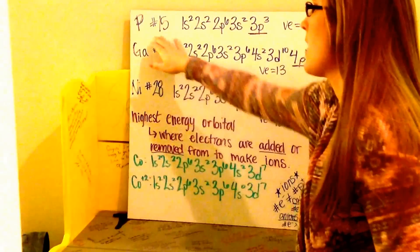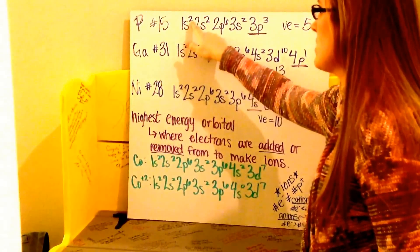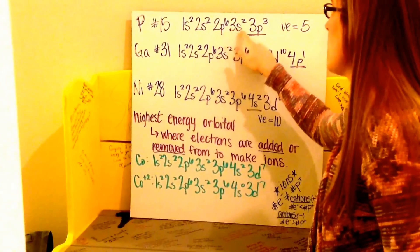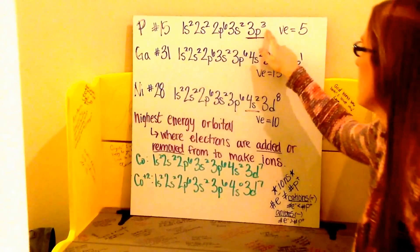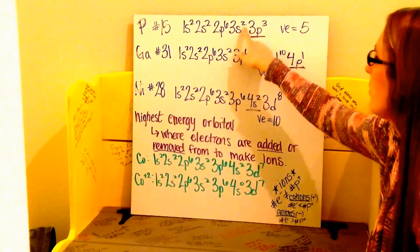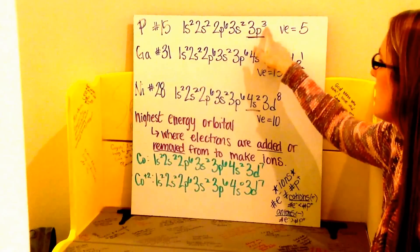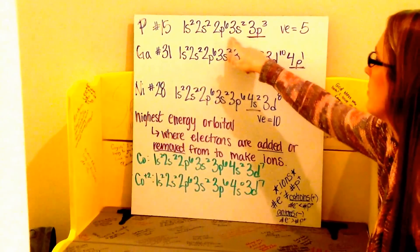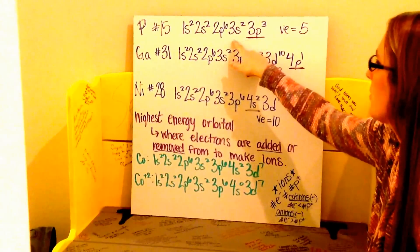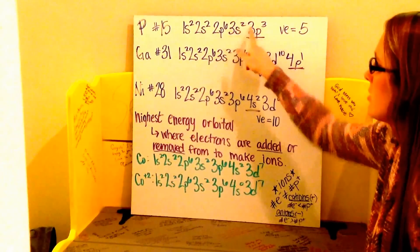Continuing on with phosphorus, this is number 15. You should have: 1s2, 2s2, 2p6, 3s2, and 3p3. My number of valence electrons is equal to 5 — with the 2 in the third S orbital and the 3 in the third P orbital. My highest energy level is 3s and 3p, the third energy level, and that tells me where my valence electrons are located.